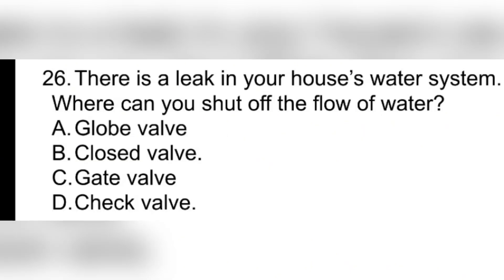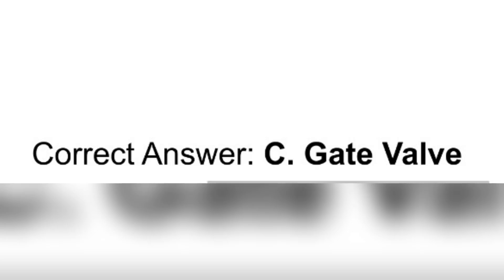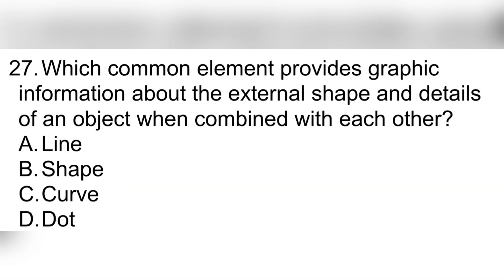Question 26. There is a leak in your house's water system. Where can you shut off the flow of water? A. Globe valve. B. Closed valve. C. Gate valve. D. Check valve. Correct answer: C. Gate valve.